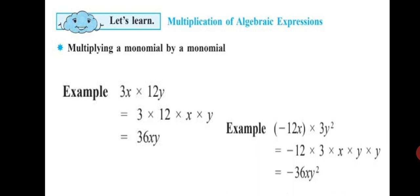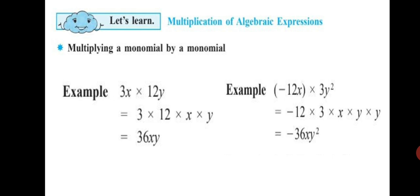Another example: minus 12x into 3y squared. Multiply the coefficients first — minus 12 into 3 is minus 36. Don't forget to write the sign. And x into y squared is xy squared, since x into y into y gives xy squared. So the final answer is minus 36xy squared.